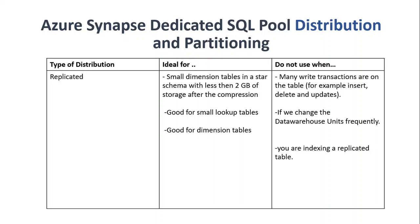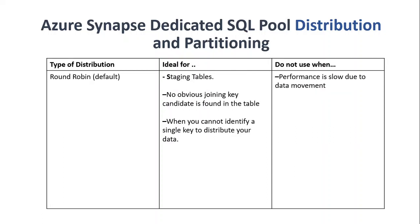Avoid using replicated distribution when your data warehouse units are changing frequently, or when your table has a lot of write transactions — meaning it keeps updating. It's best suited for dimension and lookup tables. Don't use it when you have frequent write operations or when you're regularly changing your data warehouse units.